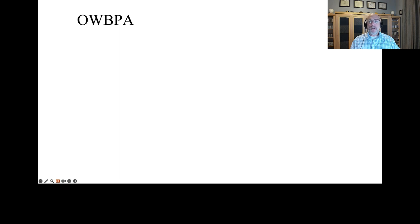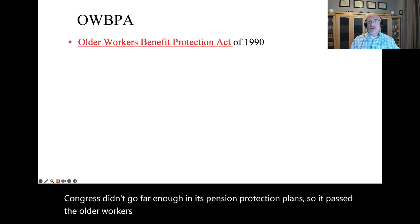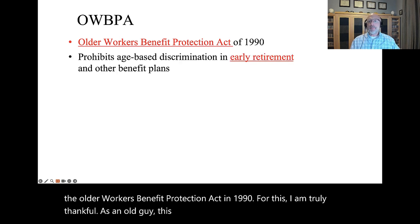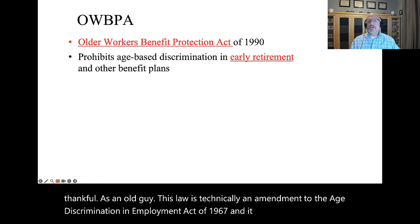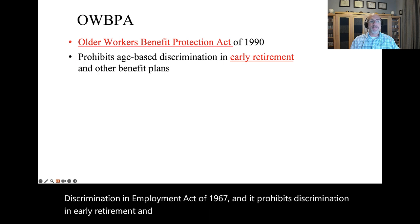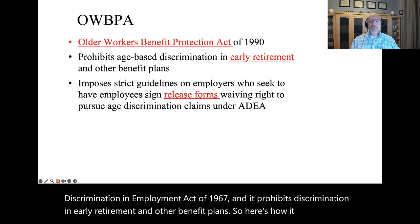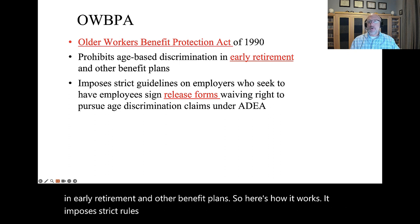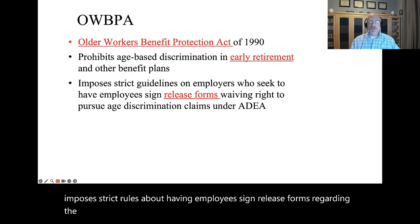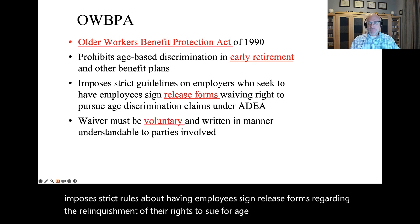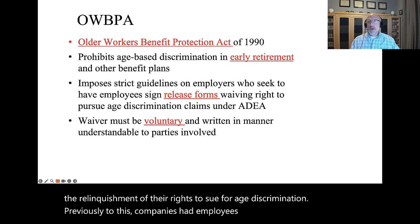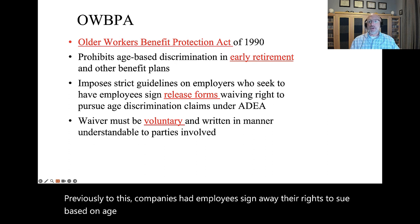Congress passed the Older Workers' Benefit Protection Act in 1990. This law is technically an amendment to the Age Discrimination in Employment Act of 1967, and it prohibits discrimination in early retirement and other benefit plans. It imposes strict rules about having employees sign release forms regarding the relinquishment of their rights to sue for age discrimination. Previously, companies had employees sign away their rights to sue based upon age discrimination after they reached 40 years of age and qualified for protection under the ADEA.